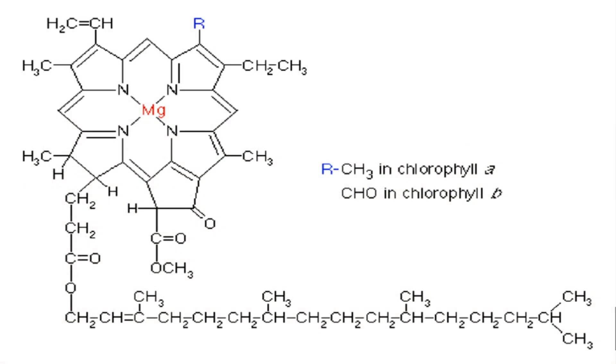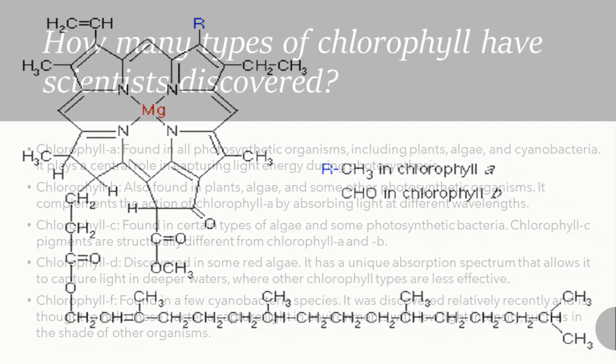In this figure, there is a structure of chlorophyll showing RCH3 in chlorophyll A and CHO in chlorophyll B.